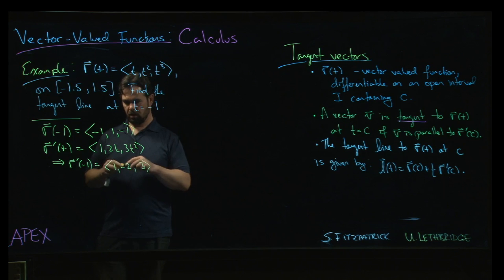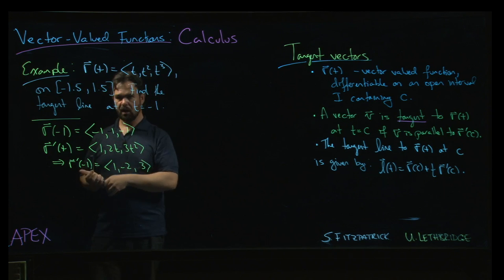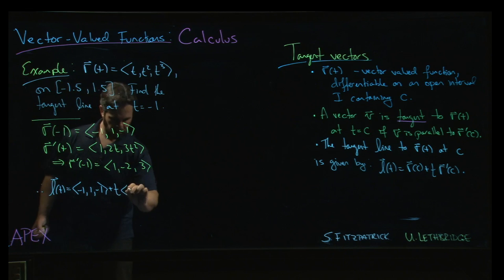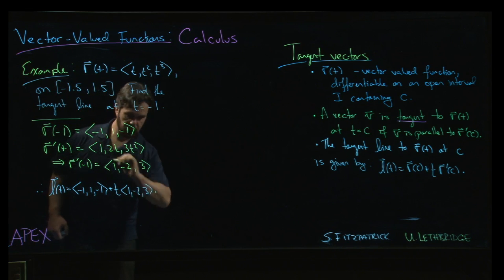So there's our direction vector, our point on the line, and we know how to proceed from there. The equation of the line is minus 1, 1, minus 1, plus t times 1, minus 2, 3.